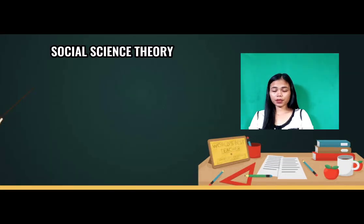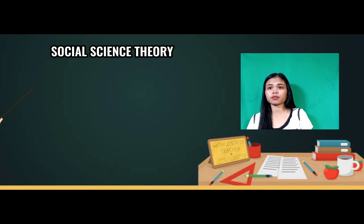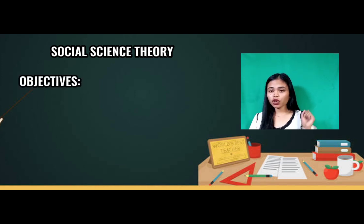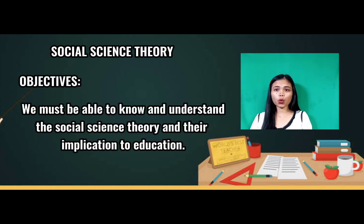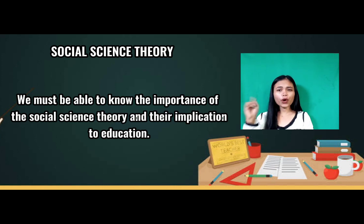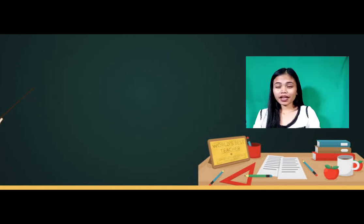My part of this topic is about the social science theory, followed by the report of Ms. Estevez on the implications to education, which is connected to the social science theory. Let us keep in mind the following objectives: we must be able to know and understand the social science theories and their implication to education, and we must be able to know the importance of the social science theories. These are the sub-topics: the three social theories.